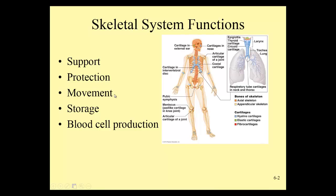Movement — together with muscles, we are able to move because our bones have joints which bend at the knee, the elbow, the wrist, the neck, the waist. We have the ability to move working with muscles. Bones can't move without the help of muscles, so without muscles the skeleton would not move.